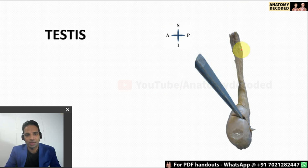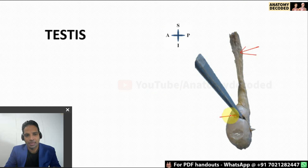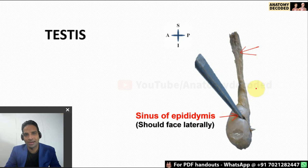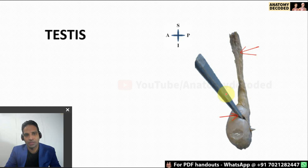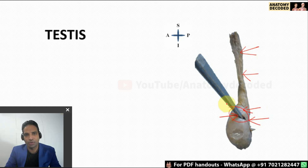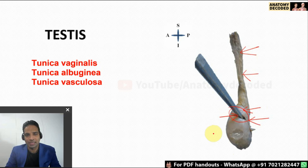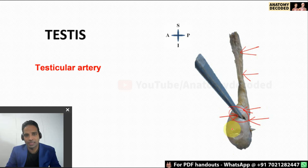Now let's cover the testes. A specimen of testes comes along with the spermatic cord — hold the spermatic cord so that the testes hangs below, with the epididymis facing the lateral aspect. For side determination: spermatic cord or epididymis is on the superior aspect; epididymis is on the posterior aspect; and the sinus of the epididymis faces laterally. The coverings of the testes from outside in are: tunica vaginalis (peritoneum), tunica albuginea, and tunica vasculosa.